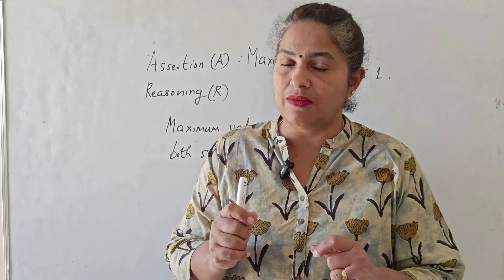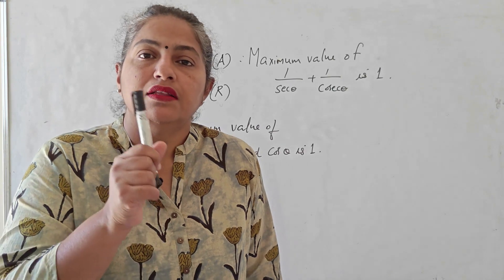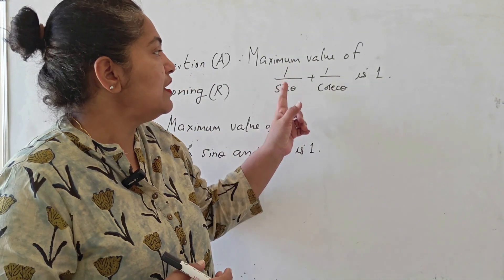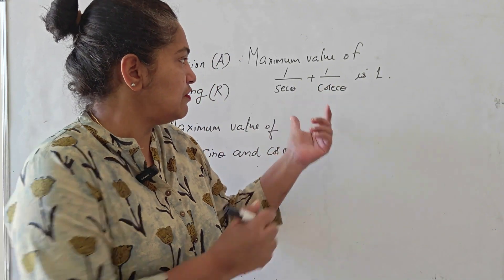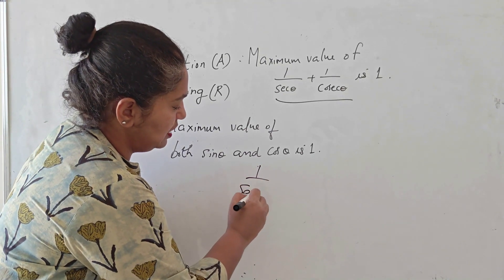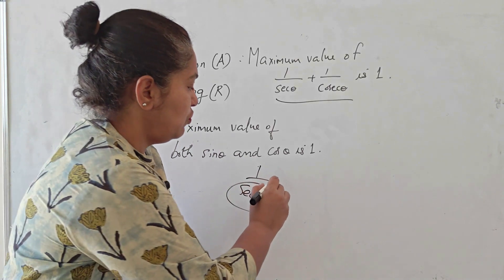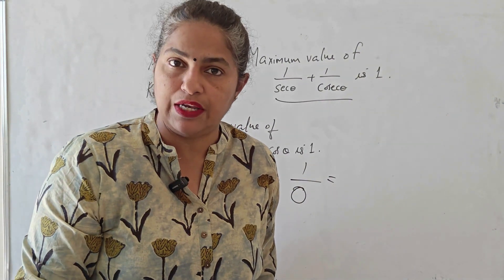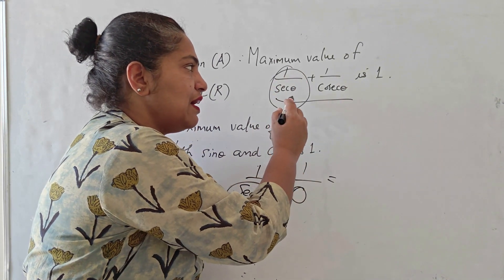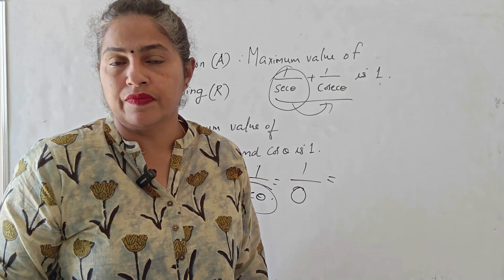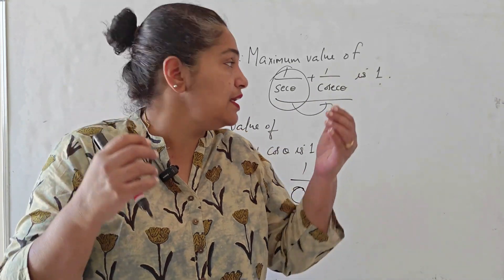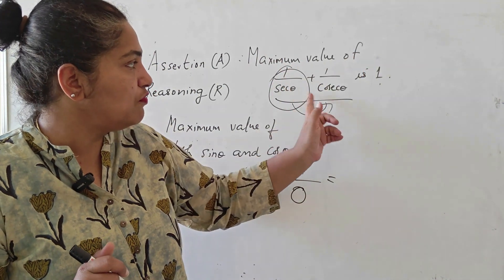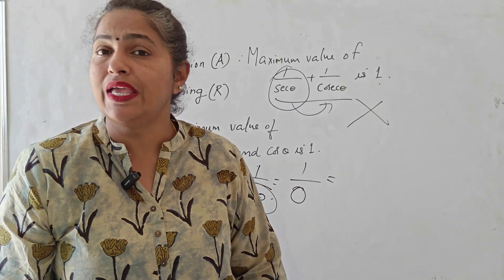We have to individually assess whether each statement is correct. The assertion says the maximum value of 1/sin θ + 1/cosec θ is 1. The maximum value of 1/sin θ occurs when sin θ is minimum, i.e., sin θ = 0, giving 1/0 which is undefined — a very huge value. Adding any value of 1/cosec θ to infinity gives infinity. So the assertion that the maximum value is 1 is wrong — assertion A is wrong.